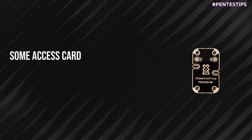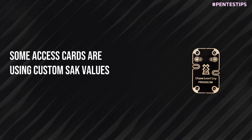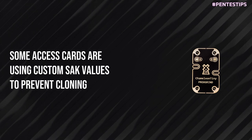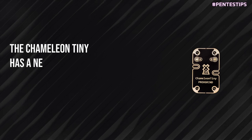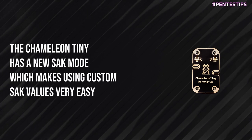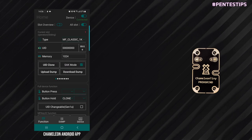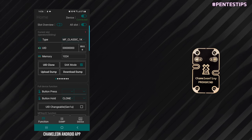Some access cards use custom SAK values to attempt to prevent card cloning. The Chameleon Tiny has a new SAK mode which makes using custom SAK values very easy. When SAK mode is enabled, the Chameleon Tiny will take the SAK value from the Block 0 configuration.